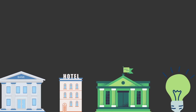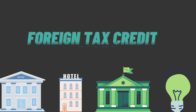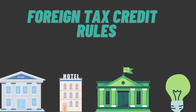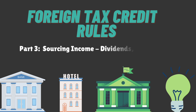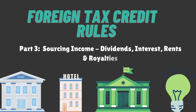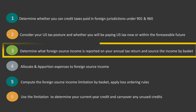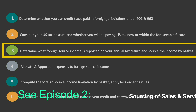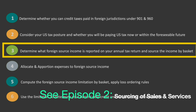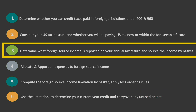Welcome to Accounting with Audra and the third in a series on foreign tax credits. In this episode, we'll continue to discuss sourcing rules for gross income items with a focus on passive type income, including dividends, interest, rents, and royalties. As a quick recap, looking back at the six components of the foreign tax credit, we're still discussing item three: determining what foreign source income is reported on your annual tax return and sourcing that income by basket. In video two in this series, I explained how gross services and sales income are sourced. In this video, I'm going to continue on with additional sources of income.